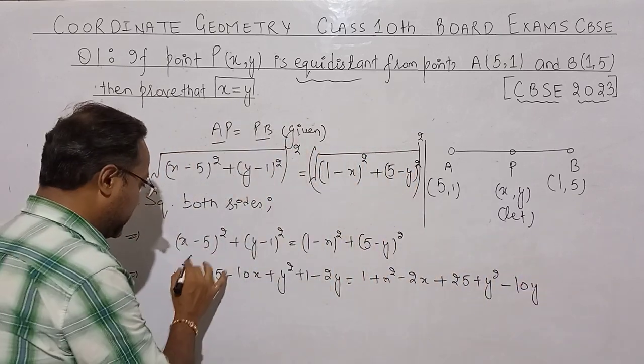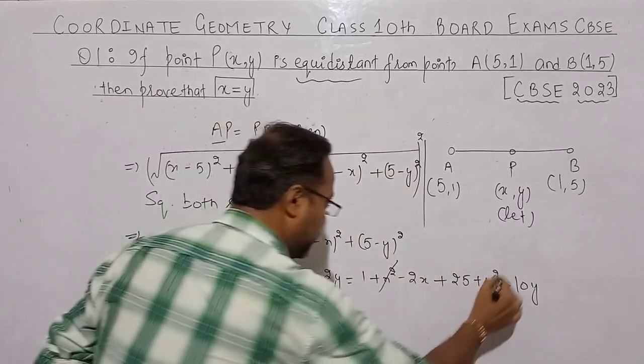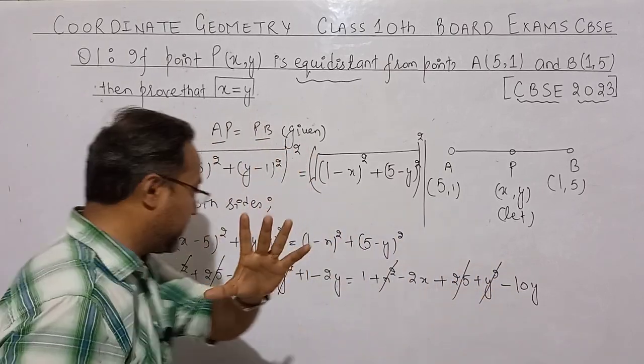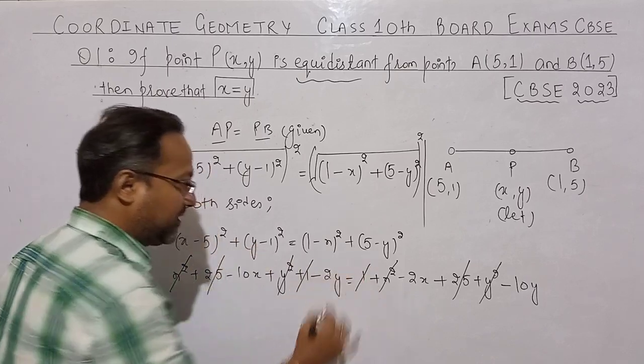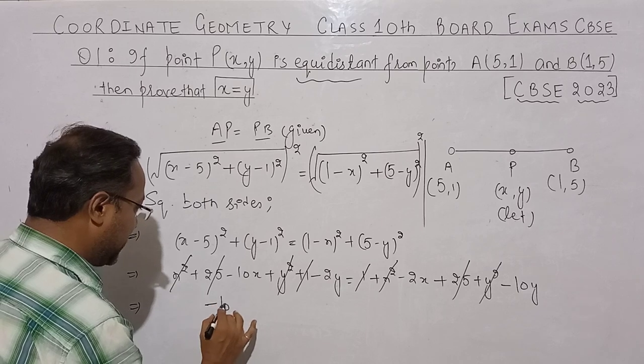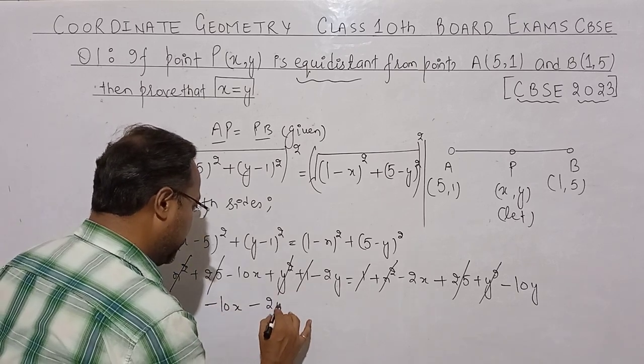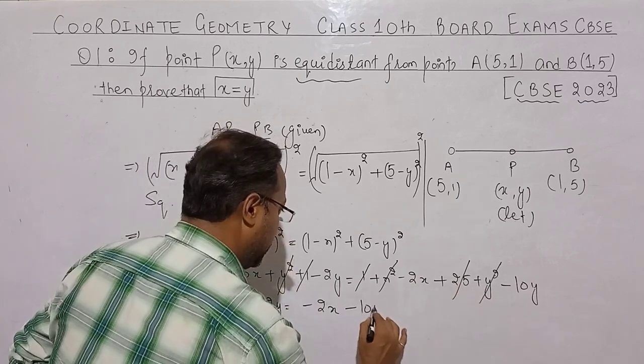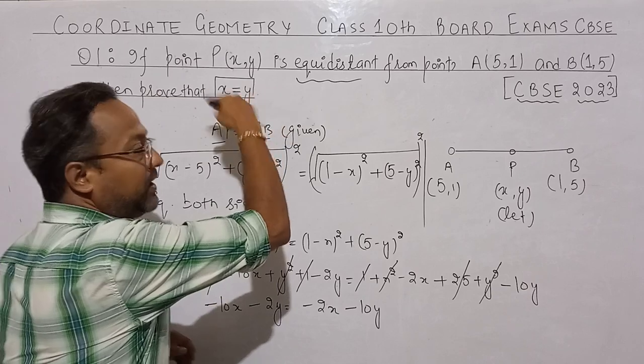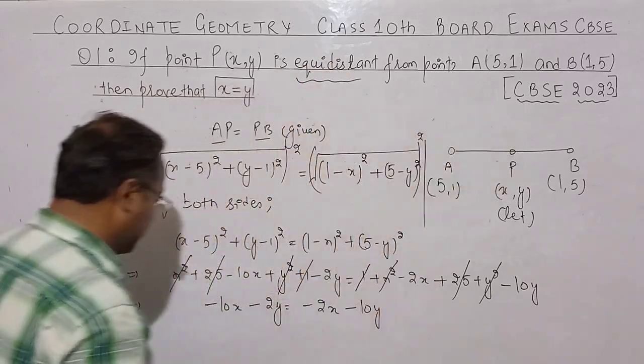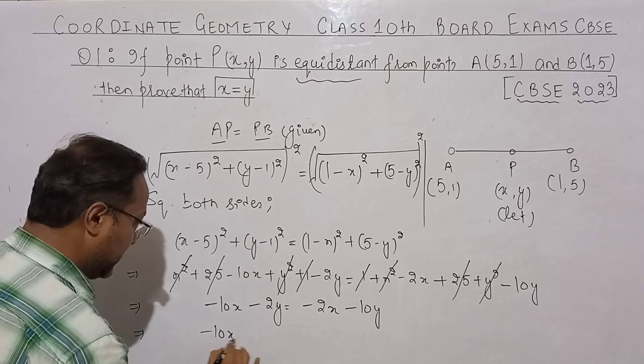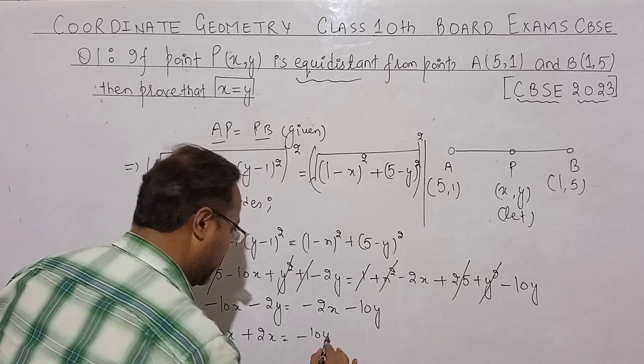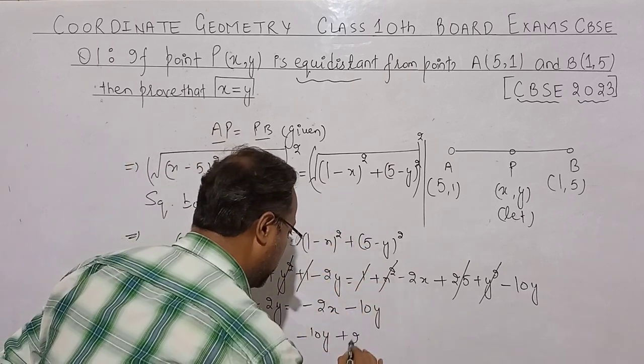Now this x² cancel, this y² cancel, 25 cancels, and this plus 1 and this plus 1 cancel. What remains? Here minus 10x and here minus 2y. Right hand side minus 2x and here minus 10y. So minus 10x plus 2x equals minus 8x, and minus 2y plus 10y equals plus 8y.